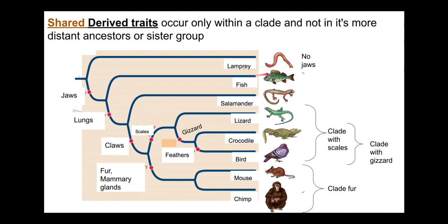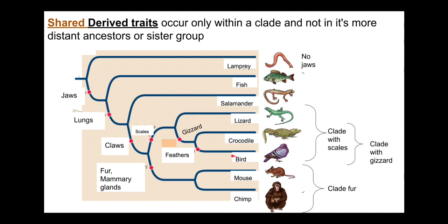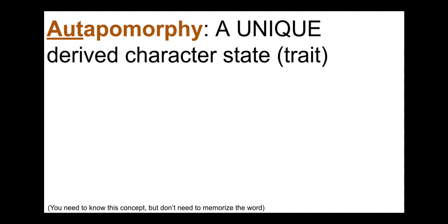We can create many clades that have a shared derived trait — a trait that showed up in evolutionary time — and all the groups downstream of it have that trait. There are also traits unique to a single taxon, like feathers. A shared derived trait is called an apomorphy. You need to understand the general concept: a shared derived trait is possessed by all of the organisms within the clade. We can use the presence of apomorphies to help us define clades.